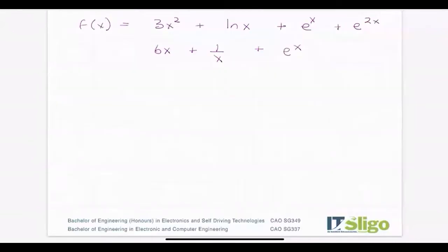So f'(x) or dy/dx equals 6x + 1/x + e^x + 2e^(2x). They're the same thing.